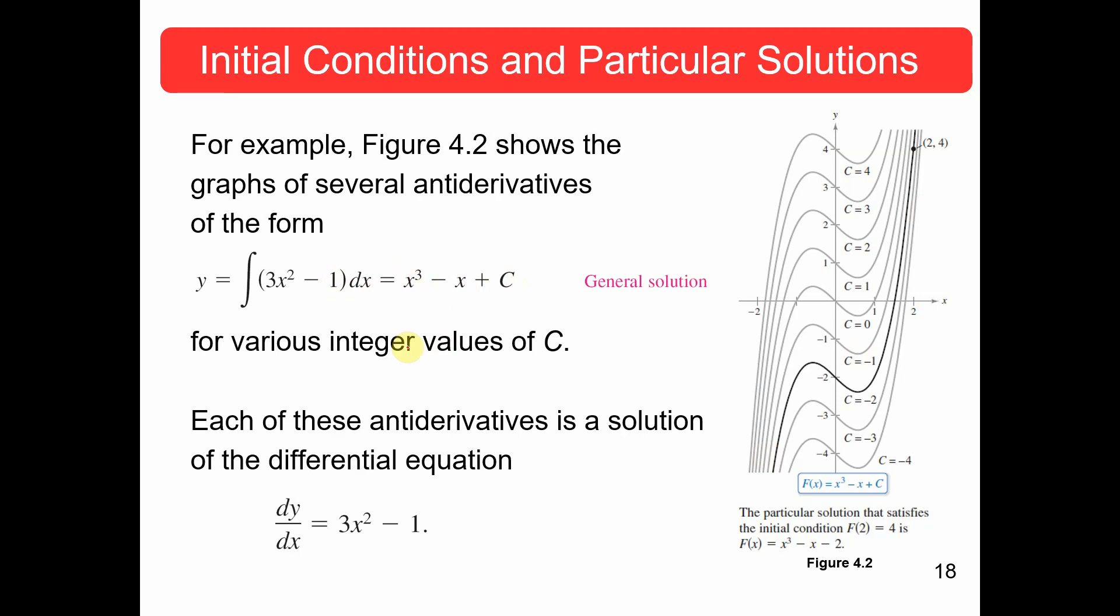So, these are all the graphs of x cubed minus x plus C when we let C be 4, 3, 2, 1, 0, negative 1, negative 2, et cetera. All of these are possible solutions to this differential equation, dy dx equals 3x squared minus 1. They all work.